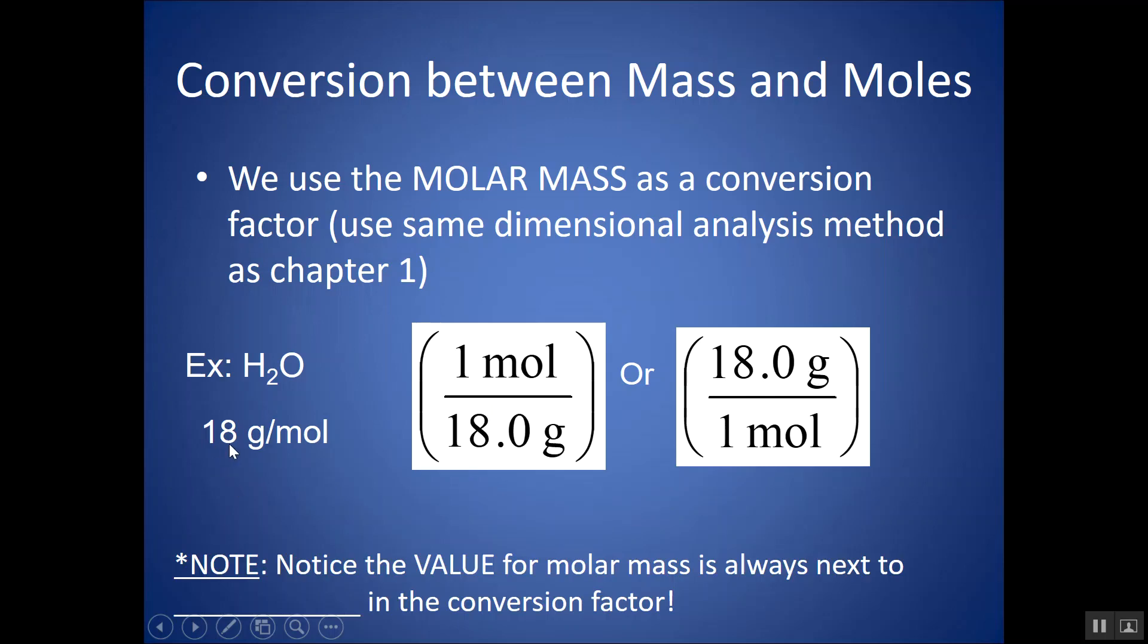Notice that the value for molar mass, like this 18, notice that I always keep it next to the grams, or the G, in the conversion factor. And notice next to moles, I always have a one because, for instance, for H2O, it weighs 18 grams for every one mole. These two values are equivalent. One mole weighs 18 grams. Those are equivalent, they just have different units. So I'm going to be able to use molar mass as a conversion factor between grams and moles. And where that 18 goes, on top or bottom, is going to depend on what unit I start with. But again, it's always going to be your molar mass next to grams and one next to your moles in your conversion factor.